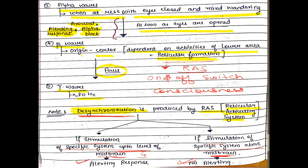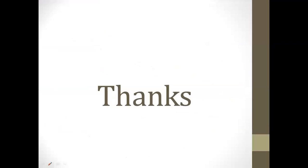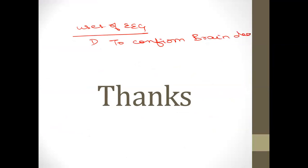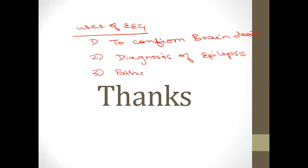Before ending, here are some important uses of EEG. EEG can be used for localization of pathological conditions such as subdural hematoma — if fluid accumulates, it gives a dull electrical activity that can be detected by EEG. It can also be used to confirm brain death, and for the diagnosis of epilepsy. The following video will be on epilepsy and seizures.